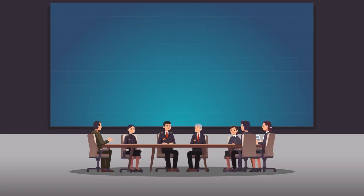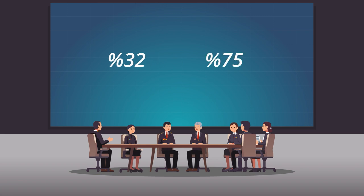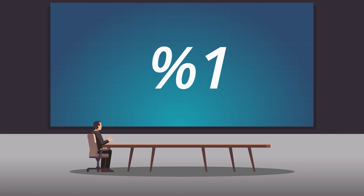Asch deneyinde katılımcıların çoğunluk görüşünü ne kadar kabul ettiklerini ölçmüştür. Katılımcıların %38'i çoğunluğun bariz bir şekilde yanlış olan görüşlerinin hepsine katılmış, %75'i ise en az bir kez çoğunluğun görüşünü benimseyerek soruya yanlış cevap vermiştir. Yardımcıların olmadığı ortamda gerçek katılımcılarla yapılan deneylerde ise yanlış cevapların oranı sadece %1 olmuştur.